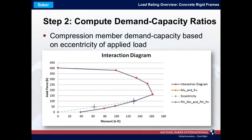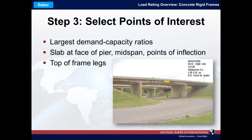One slight wrinkle for these concrete rigid frame structures is that the legs are in combined axial compression and bending. Our code check spreadsheet makes interaction diagrams for these cases. To find the demand-capacity ratio, you plot the actual moment and axial force demand on the interaction diagram, pass a line through the origin and that point, and where the line intersects the interaction diagram gives you the capacity for loads of the same eccentricity as the applied load, allowing you to determine the demand-capacity ratio.